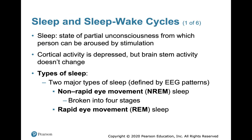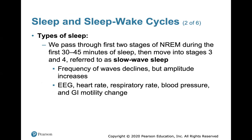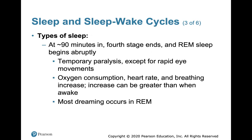Sleep is a state of partial unconsciousness from which a person can be aroused by stimulation. Cortical activity is depressed, but brain stem activity doesn't change. Types of sleep are defined by EEG patterns: non-rapid eye movement (NREM), broken into four stages, and then REM sleep, which is considered deep sleep. We pass through the first two stages of NREM in the first 30 to 45 minutes, then move to stages three and four — slow wave sleep. At about 90 minutes, the fourth stage ends and REM sleep begins abruptly, with temporary paralysis, increased oxygen consumption, heart rate, and breathing, and most dreaming occurs during REM.